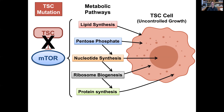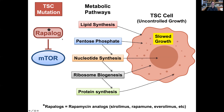One way the TSC research field has come up with to overcome this effect is by treating with mTOR inhibitors. The classic mTOR inhibitors are rapamycin analogs, collectively referred to as rapalogs. Rapamycin has many different names — you may have heard of it as sirolimus, rapamune, or everolimus — but they all basically bind to and inhibit mTOR. By doing so, they dampen this anabolic program, decrease these metabolic pathways, and ultimately lead to the slowing of cell growth.